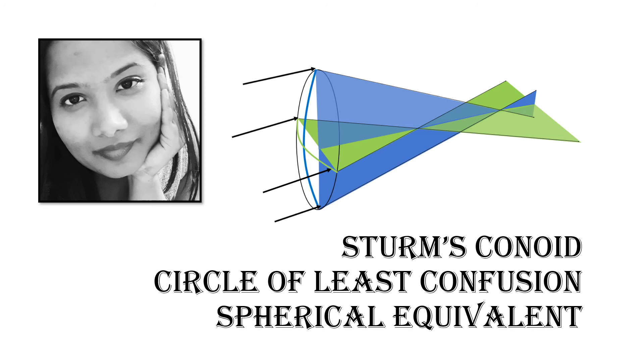In this video, we will learn about Sturm's conoid, circle of least confusion, and spherical equivalent of the eye. To orient ourselves, we will quickly revise the basics of refraction first.